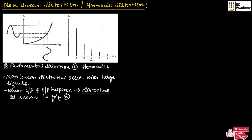As you can observe here, the input signal is very large, that's why the output signal has become distorted. In the positive half we have a large signal, and in the negative half we have a small signal. So this signal represents non-linear distortion.